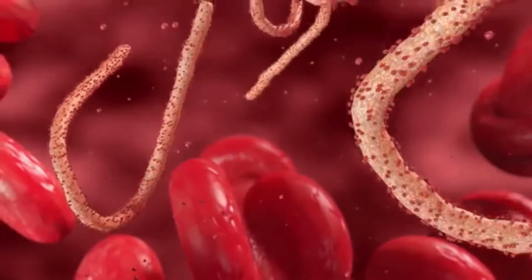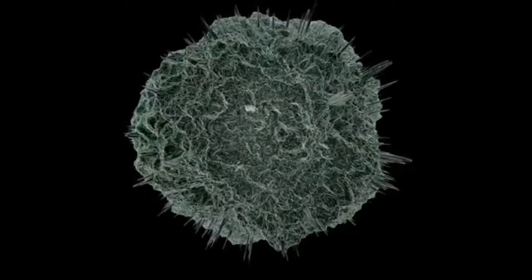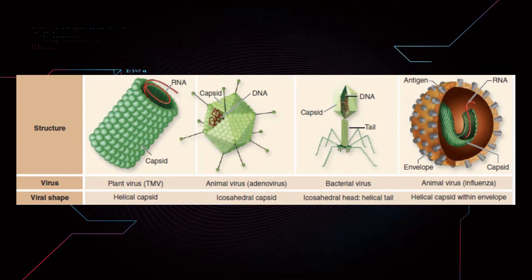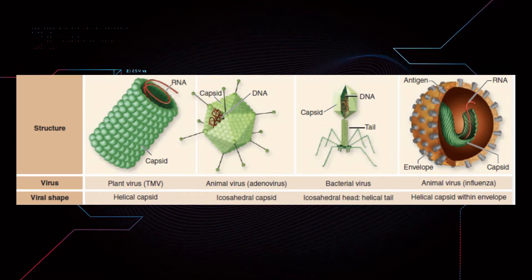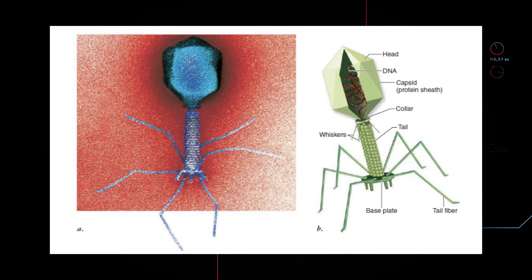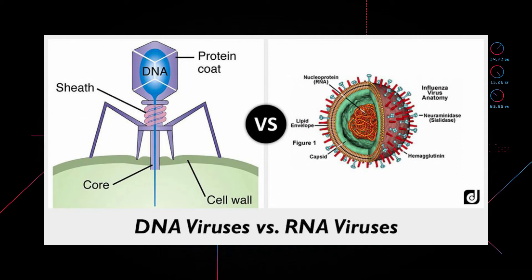To understand how viruses work, we need to understand their structure. All viruses have the same basic structure, a core nucleic acid surrounded by protein. This structure lacks cytoplasm and is not a cell. Individual viruses only contain a single type of nucleic acid, either DNA or RNA. The DNA or RNA genome may be linear or circular, single-stranded, or double-stranded.